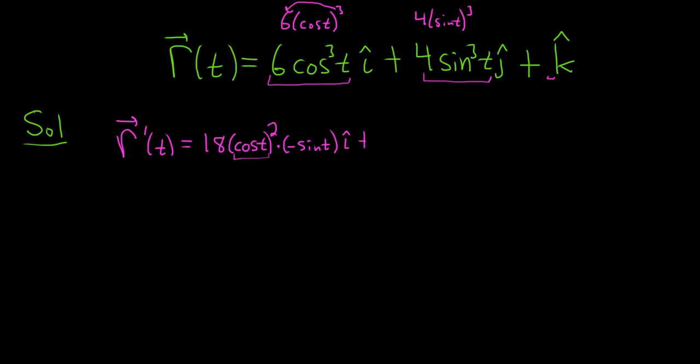Plus. Same thing here. So we bring down the 3. So 3 times 4 is 12. We're left with sine t, which is the inside function. And that's squared times the derivative of the inside function, so cosine t. And we still have the j hat.